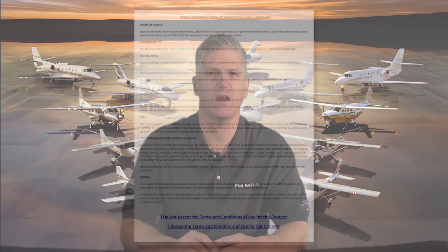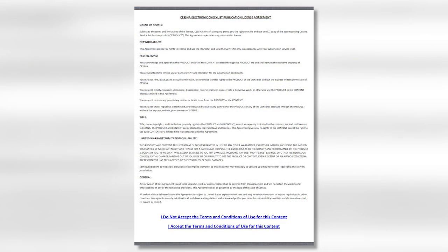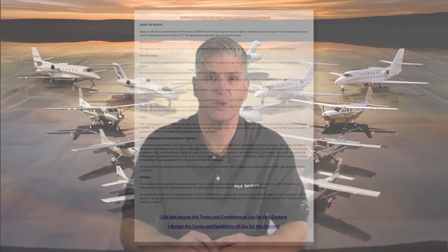I'll bet that you would like to see one of these evolved electronic checklists. So let's have a look at the Citation Sovereign. Here is the first page, using GoodReader on an iPad. Since these are PDF files, we can also use Adobe Acrobat on a Windows platform. iBooks will also work, and several friends of mine use them in ForeFlight.